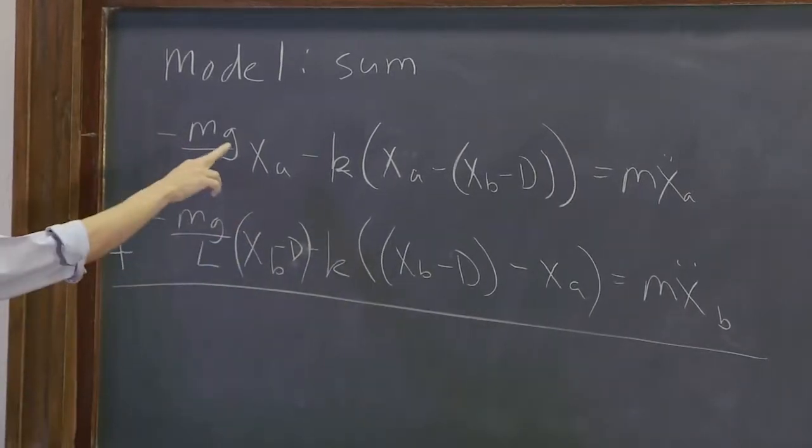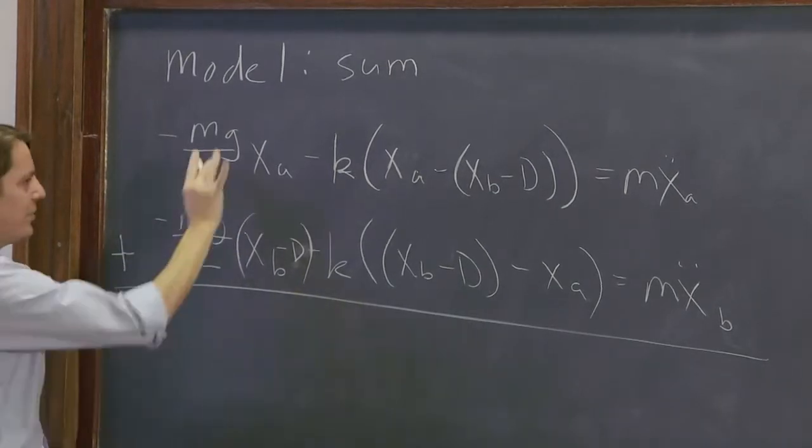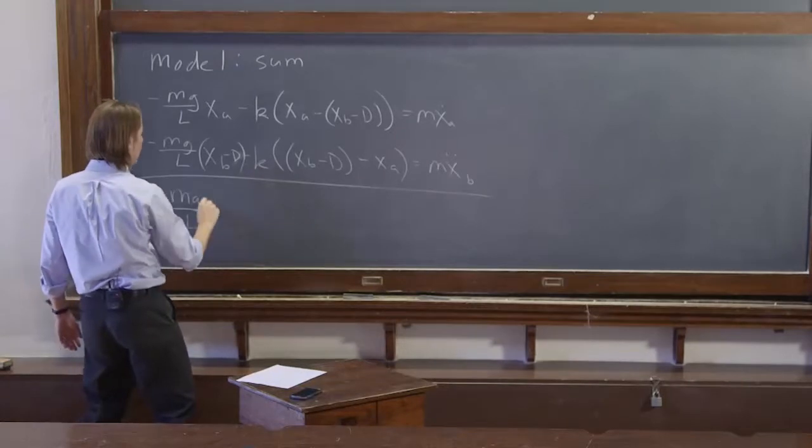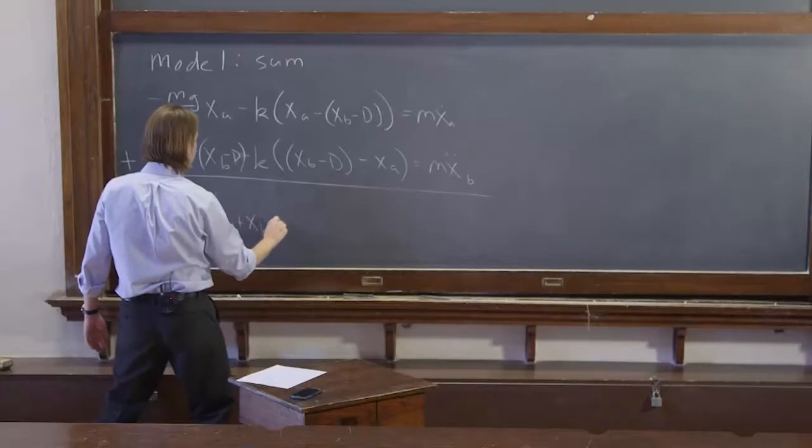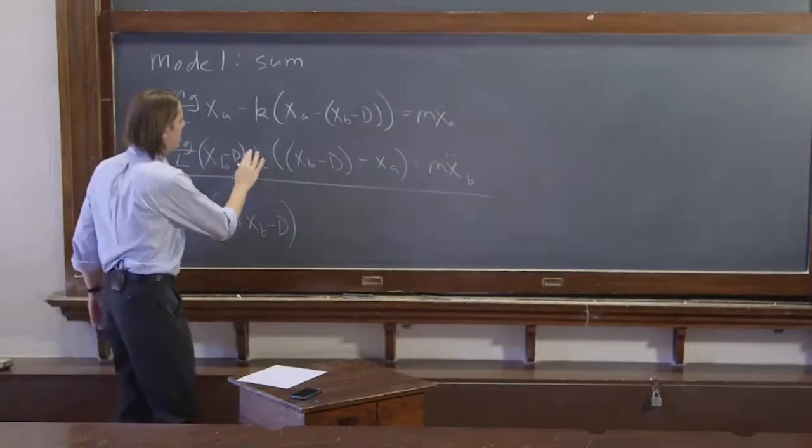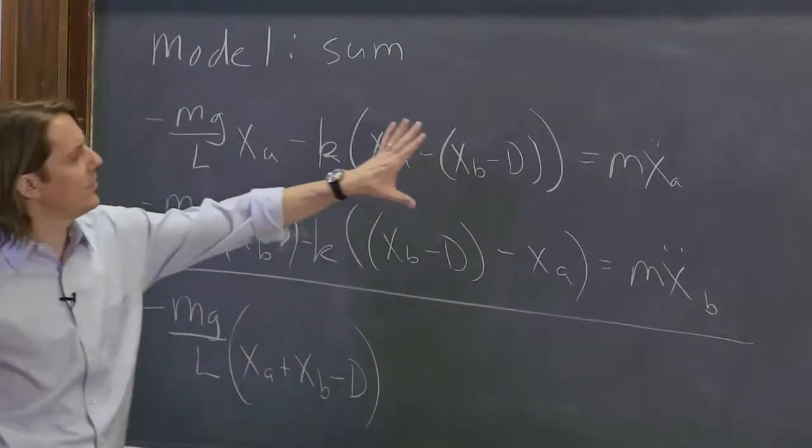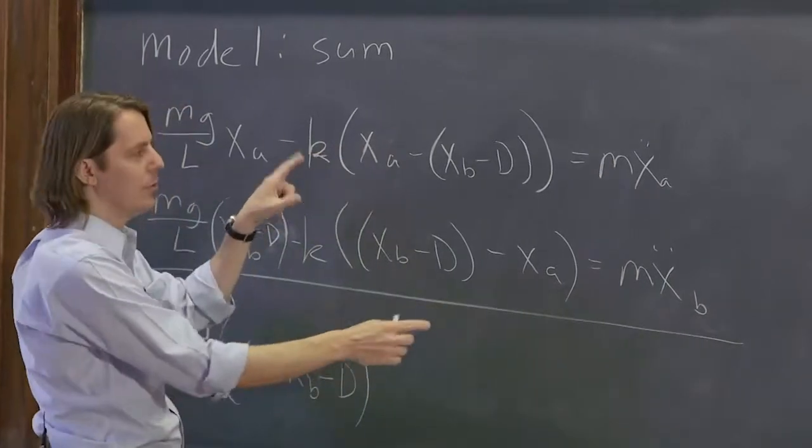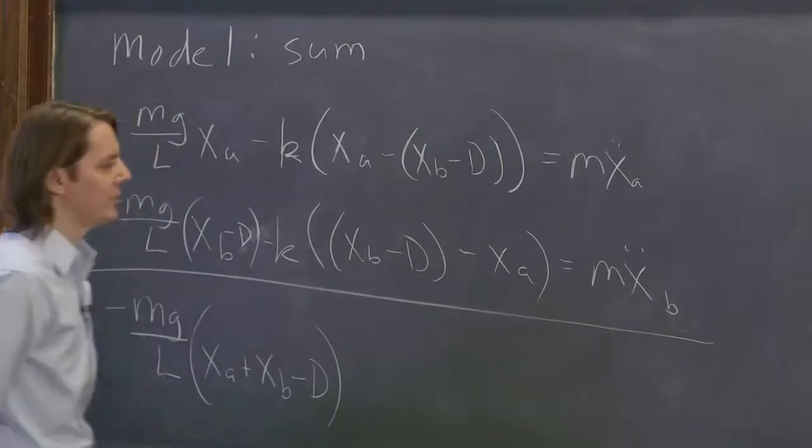Minus mg over L times xA plus xB minus d. So you end up with this term gives you minus mg over L times xA plus xB minus d. And then we look at the k term. k times this. But if you add these, you see you have plus xA here and minus xA there. Those cancel. And you have plus xB minus d and minus xB minus d. And those cancel.